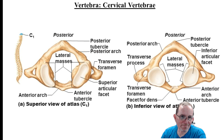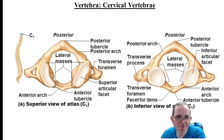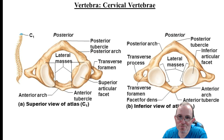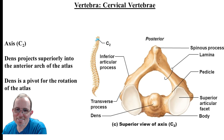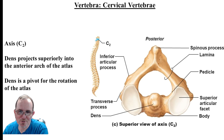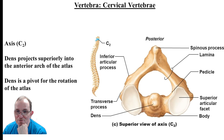C1 the atlas is basically a circle of bone with the superior articular facets where the occipital condyles sit, and those transverse foramen. No spinous process, but it does have transverse processes. C2 has a small body, the dens or odontoid process for rotation, small transverse processes, and a small spinous process.